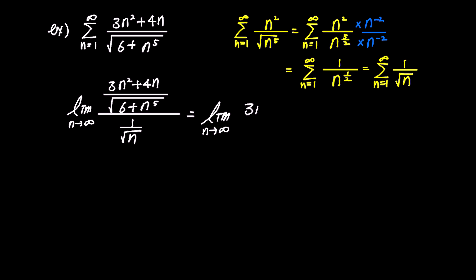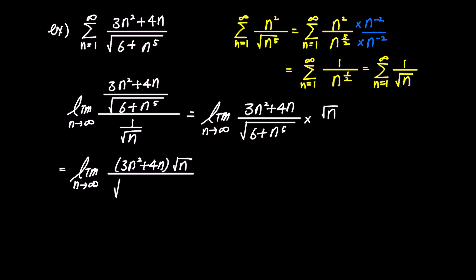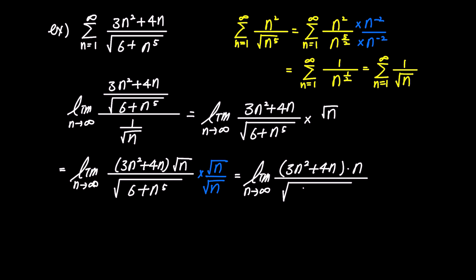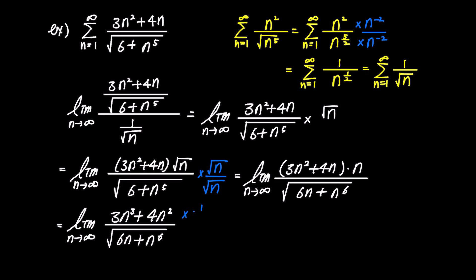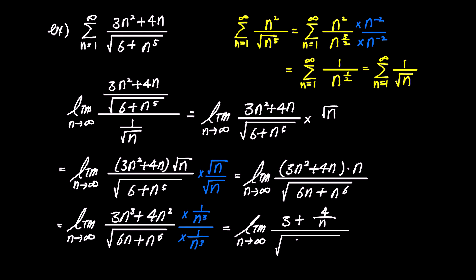Now let's find the limit using this sequence. We simplify the ratio of (3n squared plus 4n over square root of 6 plus n to the power of 5) over (1 over square root n), rewriting it as 3n squared plus 4n over square root of 6 plus n to the power of 5, times square root n. This becomes the limit of 3n squared plus 4n times square root n over square root of 6 plus n to the power of 5. Multiplying numerator and denominator by square root n gives the limit of 3n squared plus 4n times n over square root of 6n plus n to the power of 6. Expanding the numerator gives 3n cubed plus 4n squared over square root of 6n plus n to the power of 6. Multiplying by 1 over n cubed gives 3 plus 4 over n over square root of 6 over n to the power of 5 plus 1. As n approaches infinity, 6 over n to the power of 5 and 4 over n both approach 0, so the limit becomes 3.